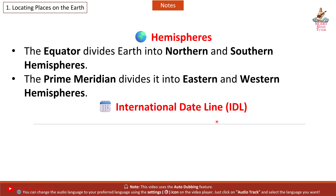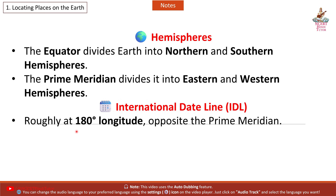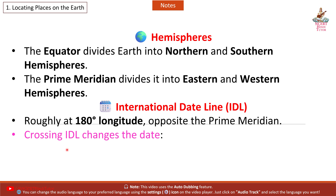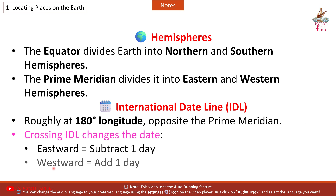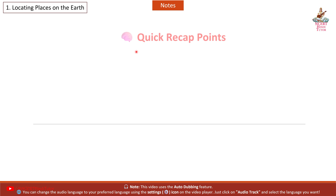International Date Line (IDL): roughly at 180 degrees longitude, opposite the Prime Meridian. Crossing the IDL changes the date — eastward: subtract 1 day; westward: add 1 day.